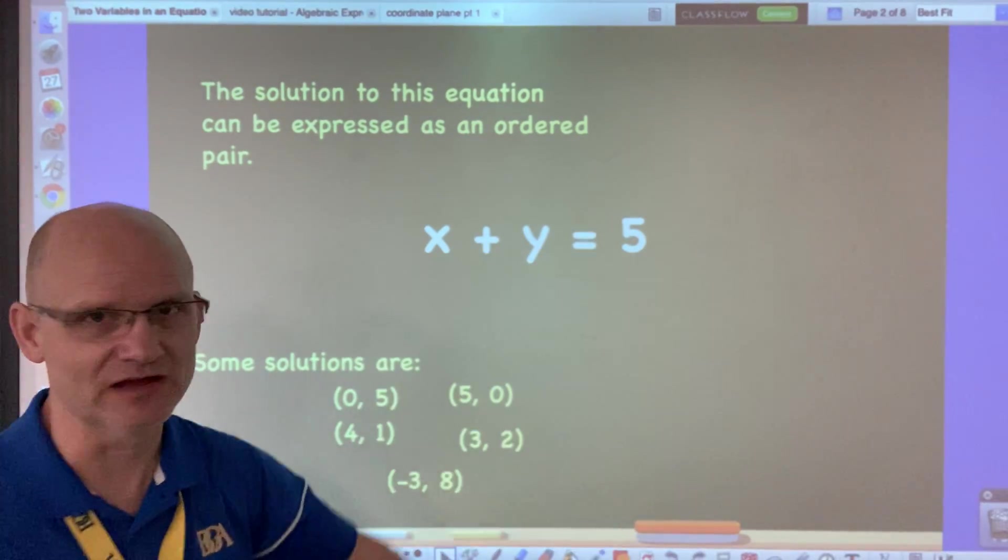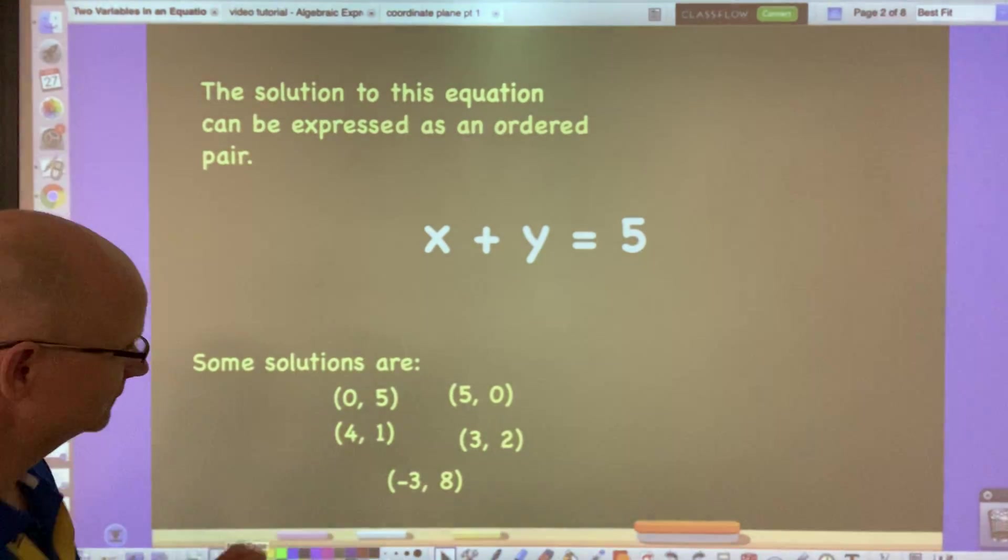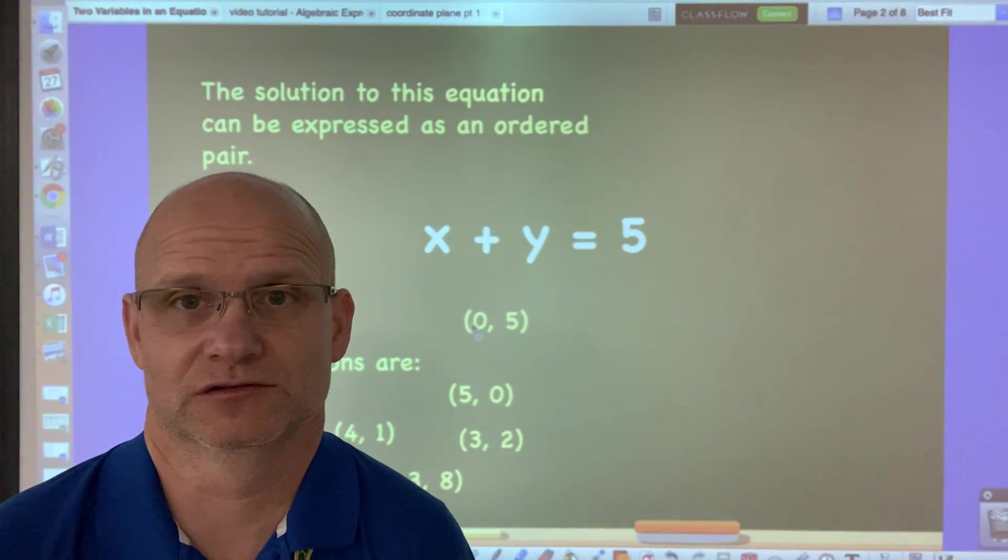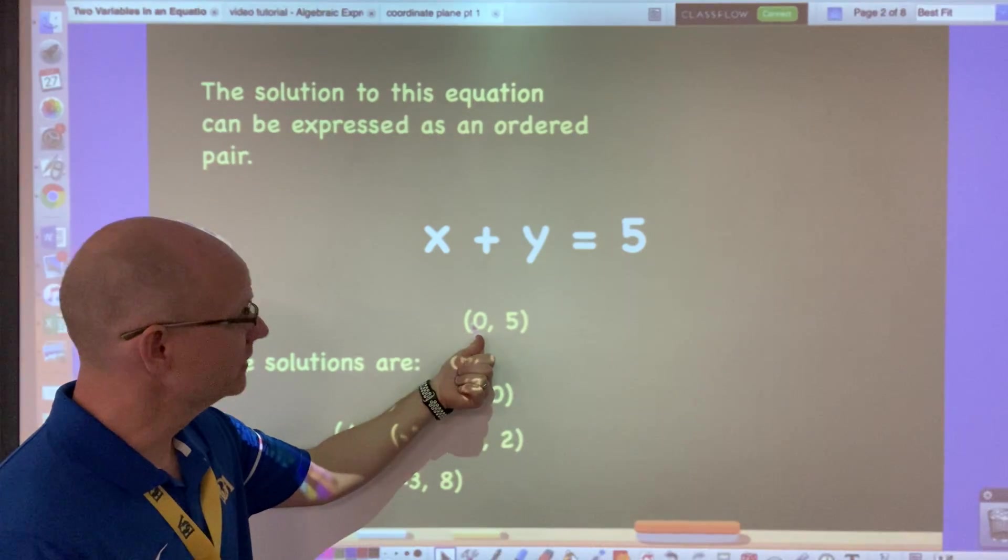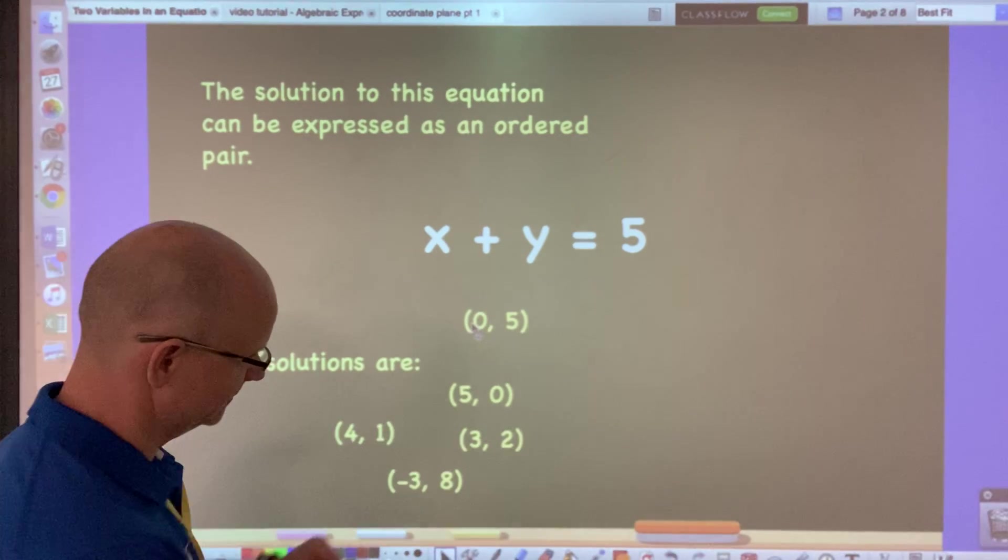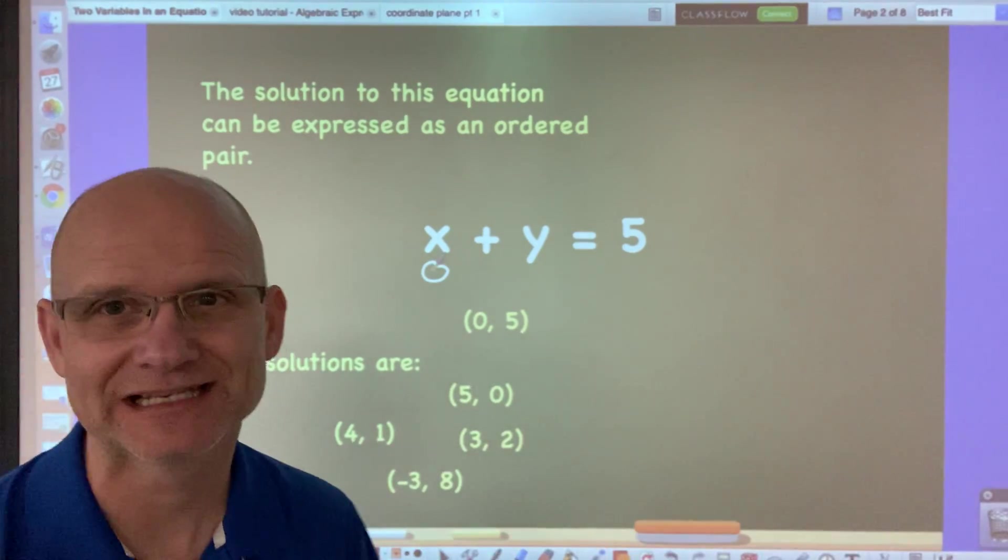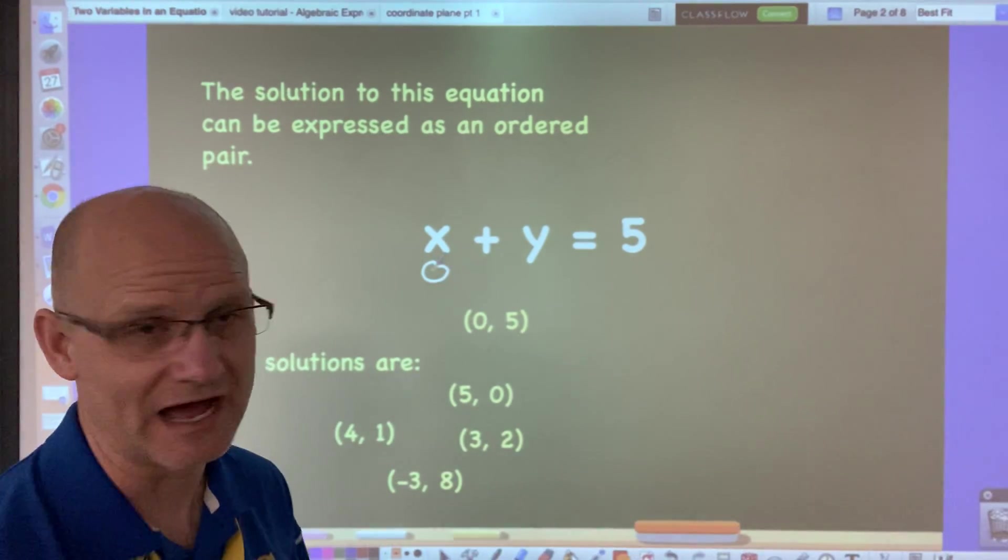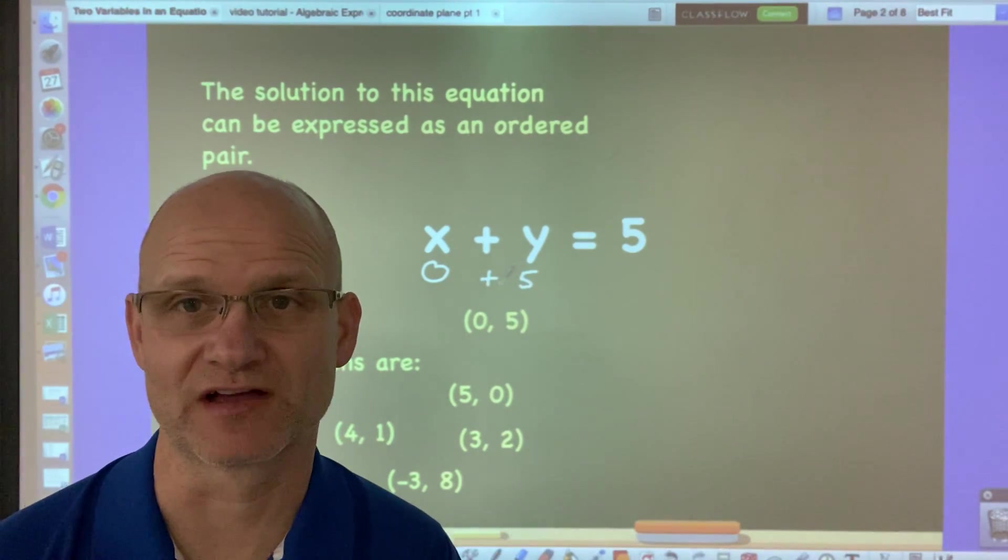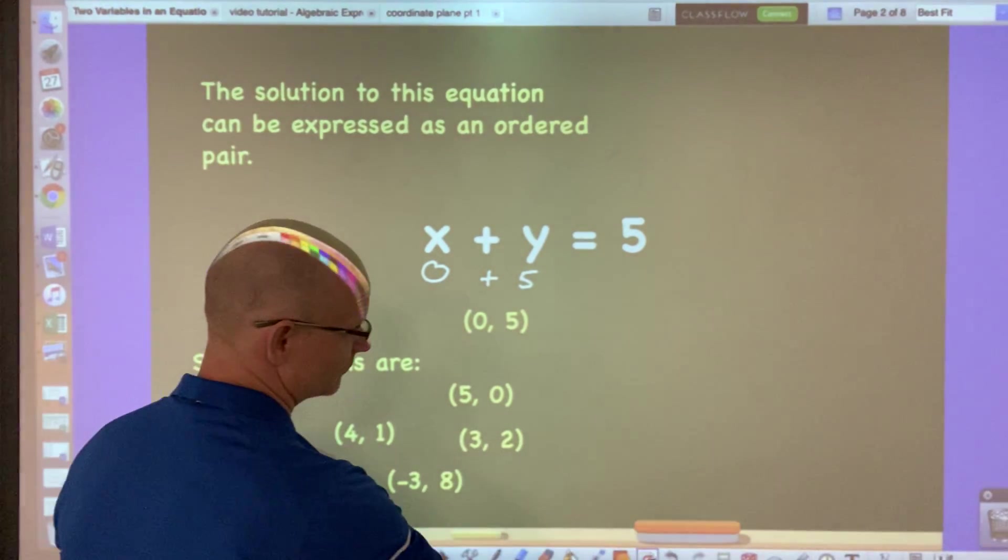When you look at this equation x + y = 5, there's lots of solutions. I mean, you could list an ordered pair like (0, 5) and the question would be, would that work? Is that a solution? Well remember, the first number in the ordered pair is the x coordinate, so this would be 0. And then the second number in the ordered pair would be the y coordinate. So is this a true statement? Is 0 + 5 = 5? Yeah, okay.